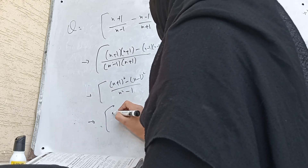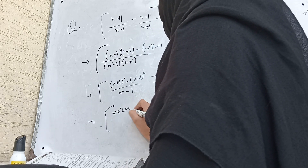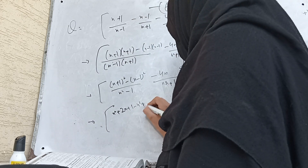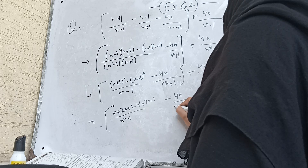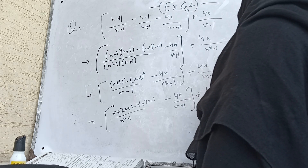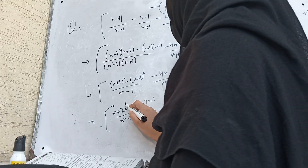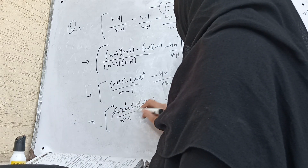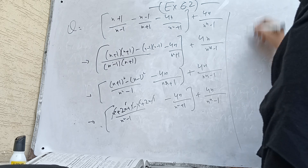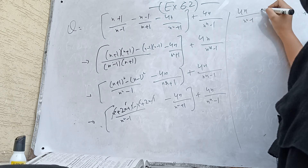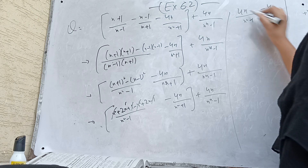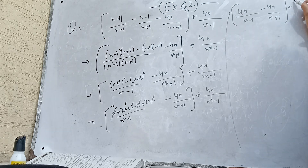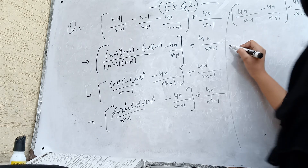So we have (x²+2x+1) minus (x²-2x+1) over (x²-1), which gives us 4x/(x²+1) and 4x/(x⁴-1), plus (x²+1) and minus 1 cancel. So we have 4x/(x²-1) and 4x/(x⁴-1) remaining in the bracket.